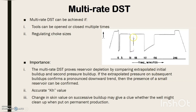Apart from the dual DST test, a multi-rate DST can also be achieved if tools are flexible or choke sizes can be regulated. Multi-rate DST is important because it proves reservoir depletion based on build-up trends and gives accurate KH values. Also, the change in skin values over time gives some idea whether the well would clean up when put on permanent production. The diagram shows three rounds of build-ups and shut-ins, and in the same way it can be executed any number of times.